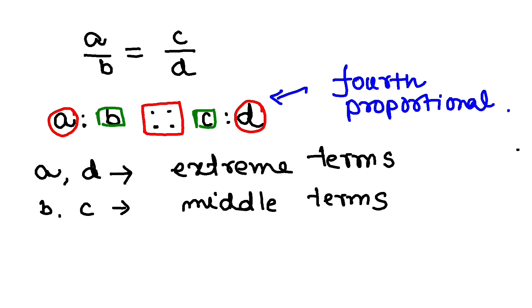So your A and D are extreme terms, B and C are middle terms, and D is called the fourth proportional.